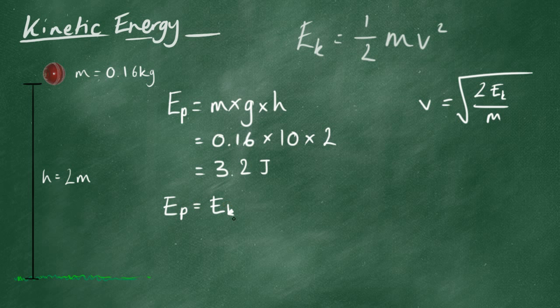Now, we're saying that all of the gravitational potential is converted into kinetic energy, if we ignore air resistance and other forces. So, that means that 3.2 is Ek, our kinetic energy, 3.2 joules.